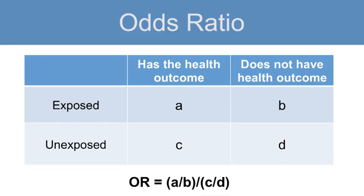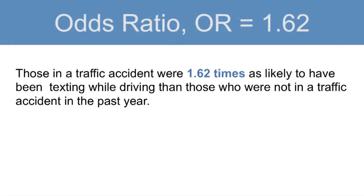Odds ratios can be calculated in cohort studies and in case control studies. Prevalence odds ratios can be calculated for cross-sectional studies. There are different ways that you can interpret a measure of association in words, as illustrated here.